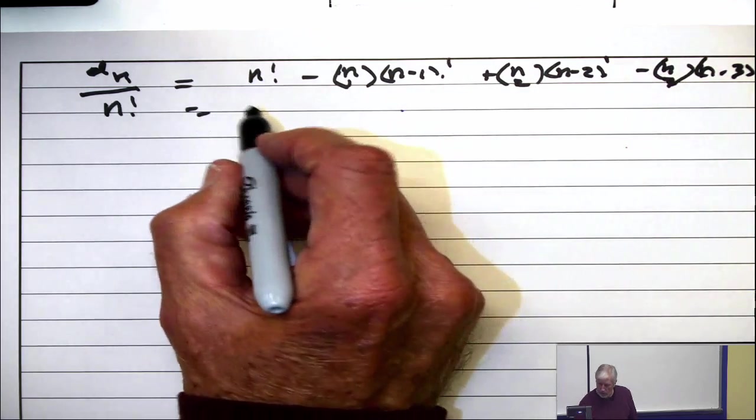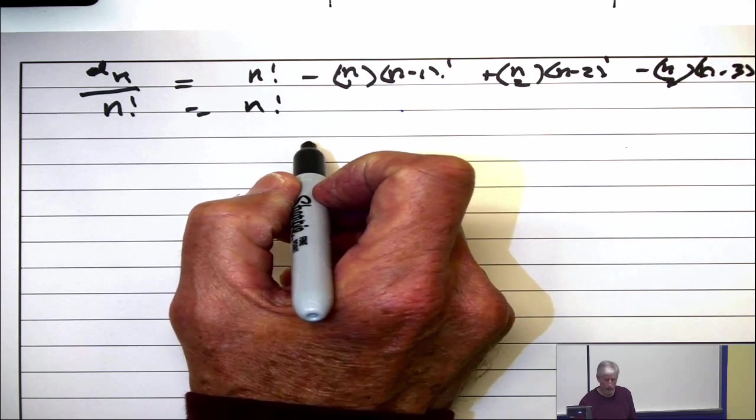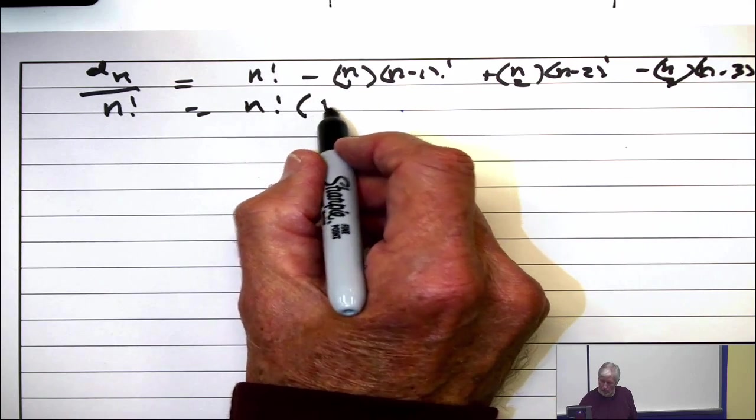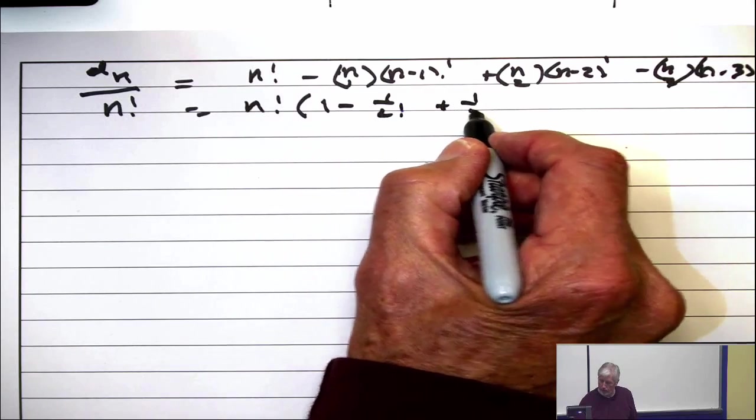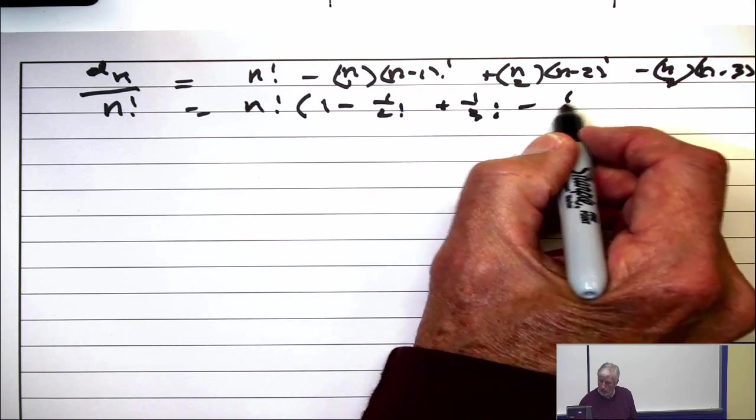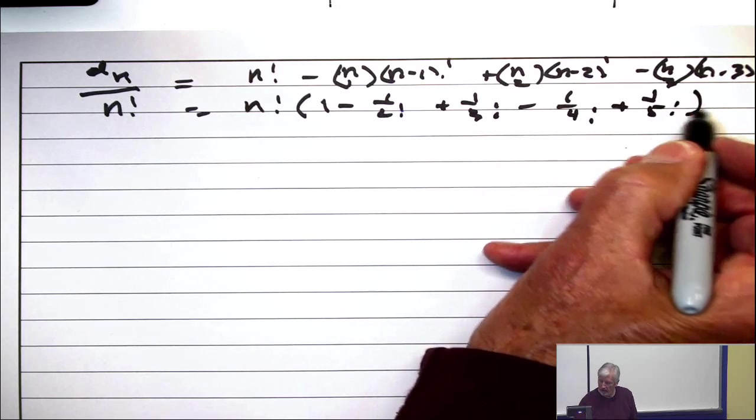So the numerators all have N factorial. Now, what's left? 1 minus 1 over 2 factorial, plus 1 over 3 factorial, minus 1 over 4 factorial, plus 1 over 5 factorial, etc.